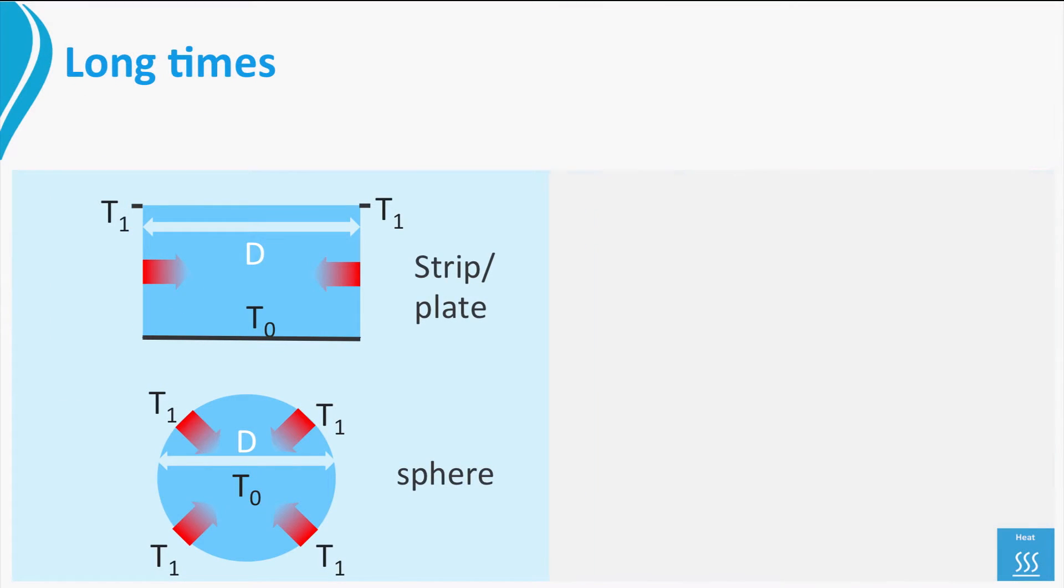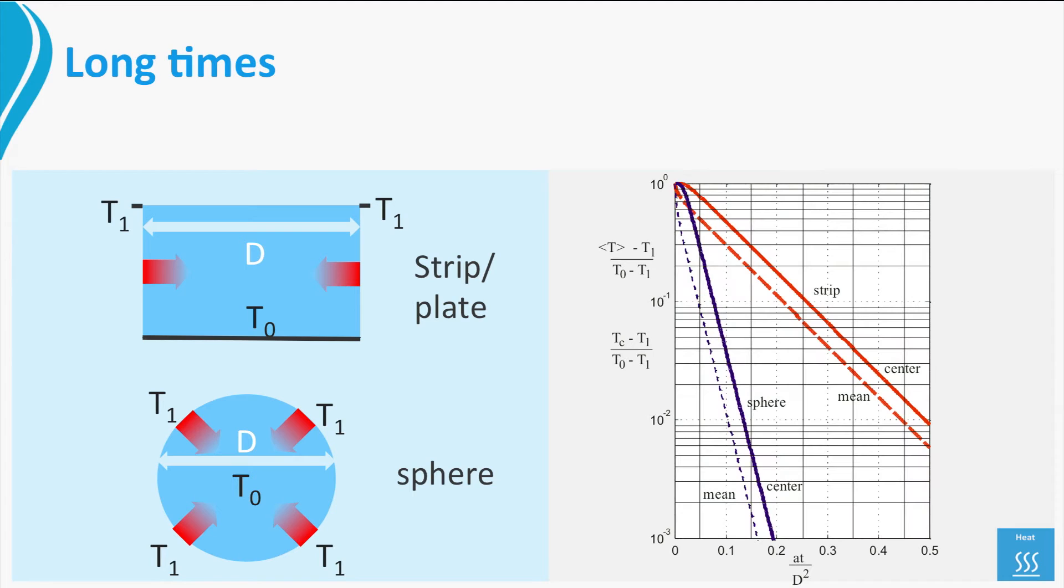Luckily this problem has been solved completely. The solution for any T has been put into graphs. The graphs show various lines. First we look at the two red lines. The full line gives the temperature of the center of the plate or strip as a function of time. The dashed line gives the mean temperature.